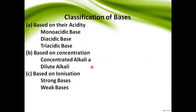Bases are classified based on acidity, concentration, and ionization. Acids are classified based on basicity, while bases are classified based on acidity — that is the key difference. Mono means 1, di means 2, tri means 3.